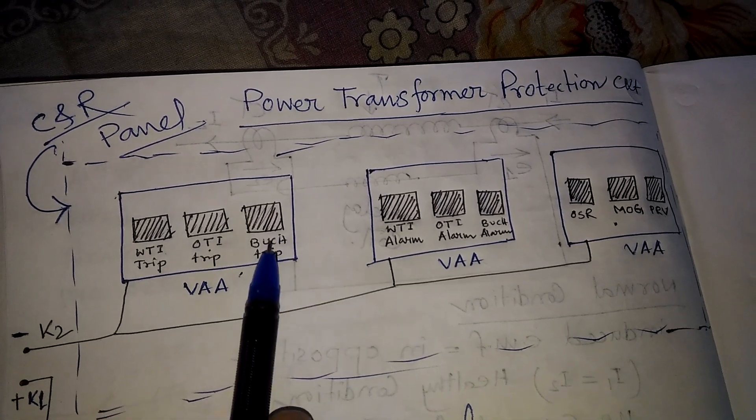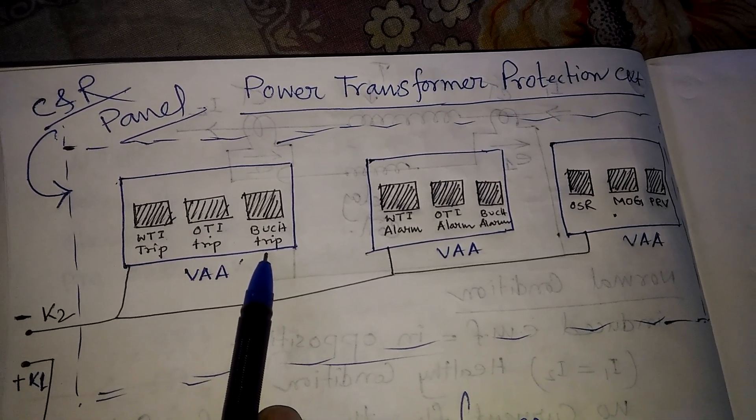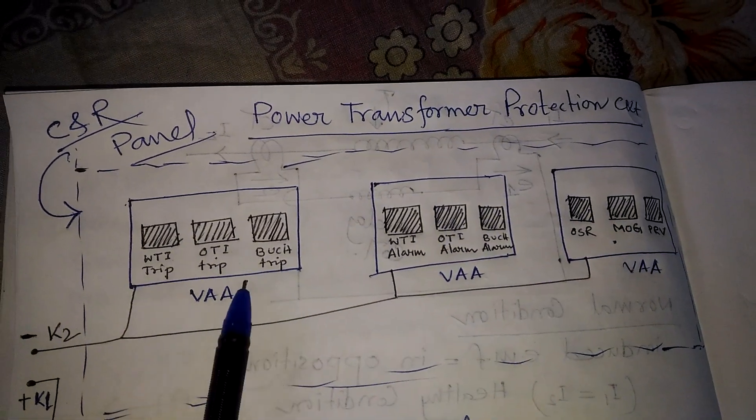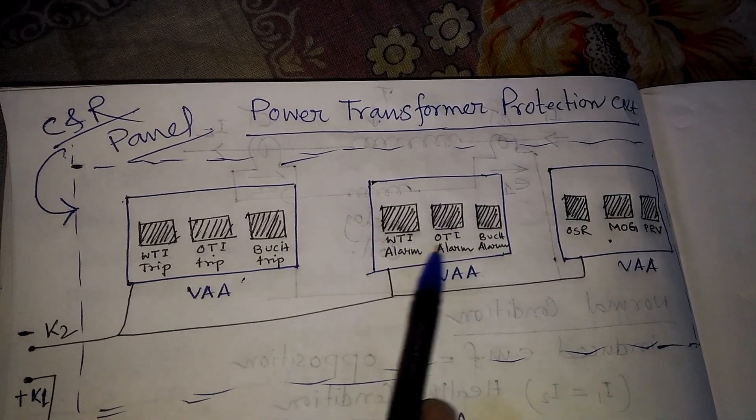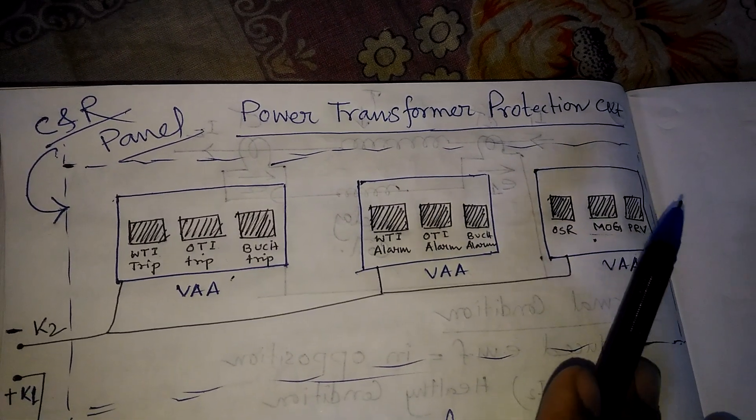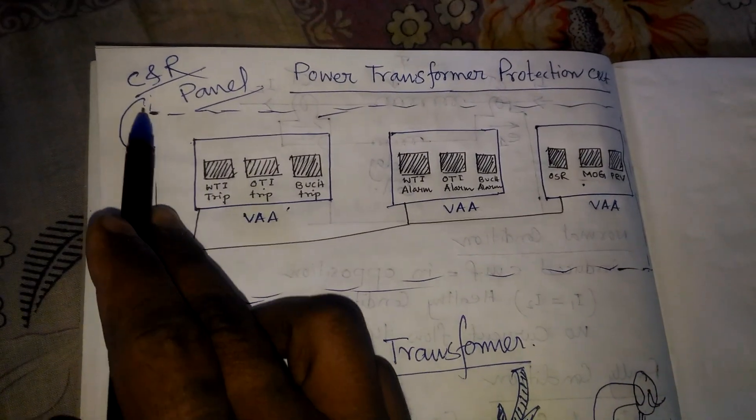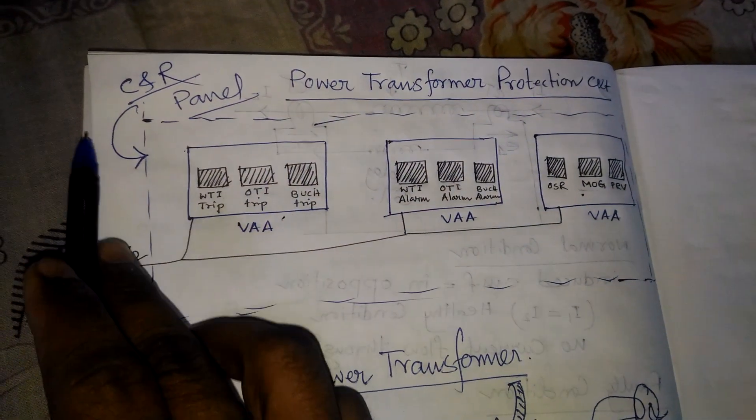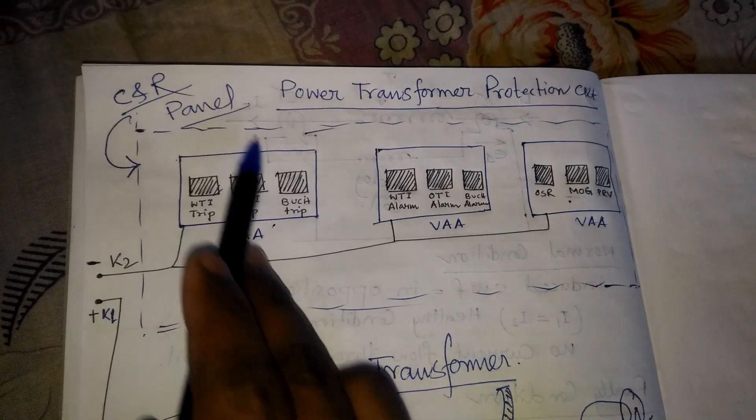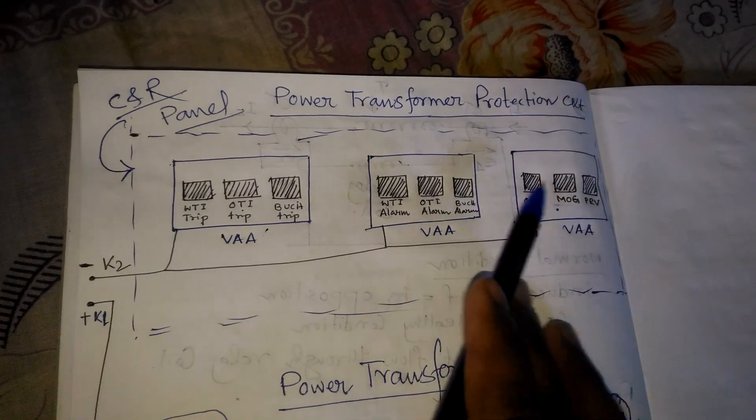We use three relays here: one is the tripping relay, one is the alarm relay, and another is also the tripping and alarm relay. It is installed in the control room panel, called control and relay panel, backside of the transformer panel.